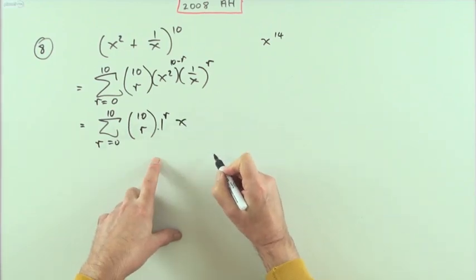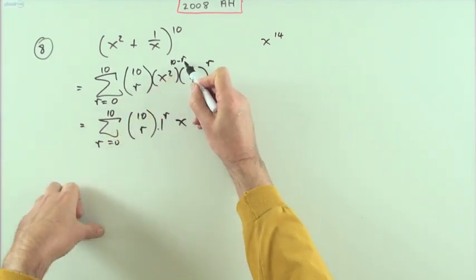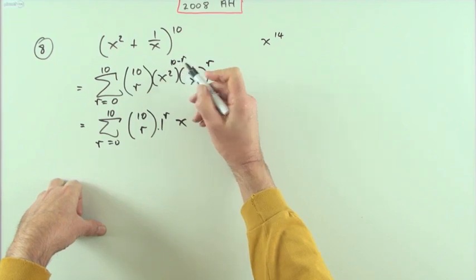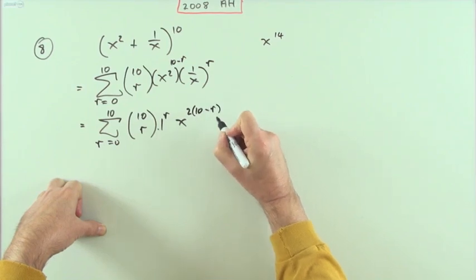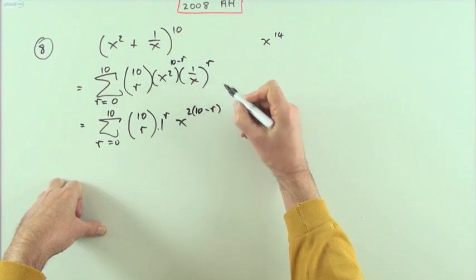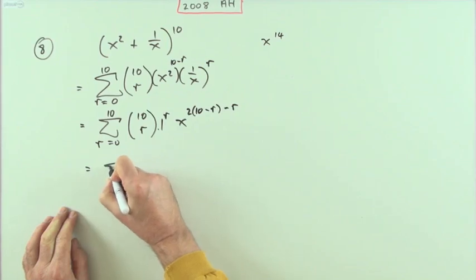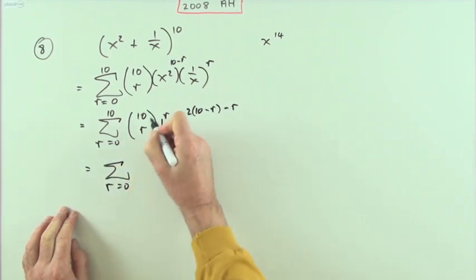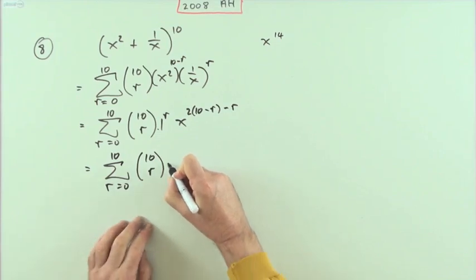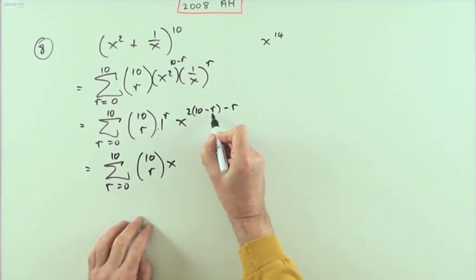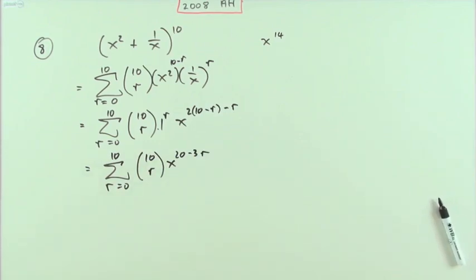What's the x part going to be? Well, you've got 2 all to the power 10 minus r, so it's 2 times (10 minus r). So you put it down as 2 times 10 minus r — that r is underneath, so it's being subtracted, giving minus another r. All together, the general term is 10-choose-r times x to the power 20 minus 3r.